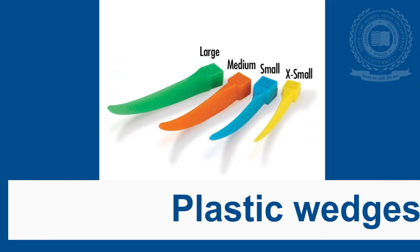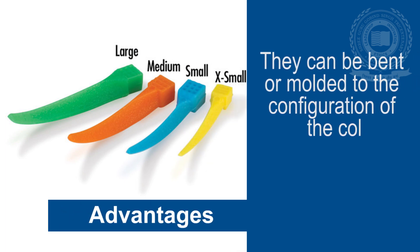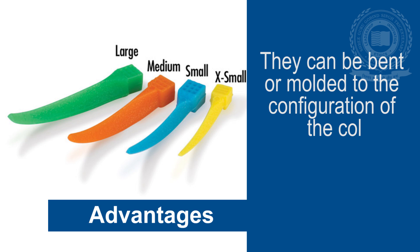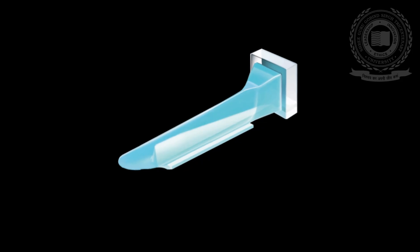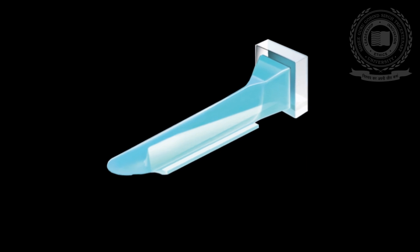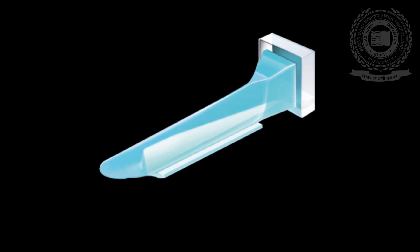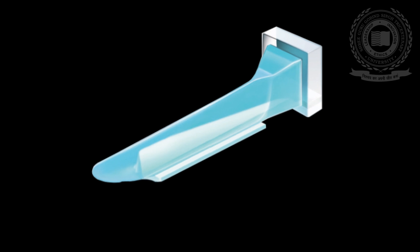Next are plastic wedges. Their advantages are that they can be bent or molded to the configuration of the col. Transparent plastic wedges are available which allow visible light to pass through, and thereby they can be used during placement of composite resin restorations.